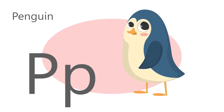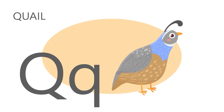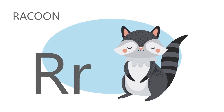P is for penguin. P, p, penguin. Q is for quail. Q, qu, quail. R is for raccoon. R, r, raccoon.